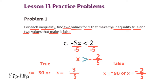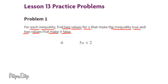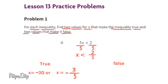Part d: 5x is less than 2. Divide both sides by 5 and you're left with x is less than 2 fifths. Values that make this inequality true would be any values less than 2 fifths — for example, x could be negative 30 or negative 3 fifths. Values that make it false would be any values not less than 2 fifths — for example, if x were 90 or x were 2 fifths, since 2 fifths is not less than 2 fifths.